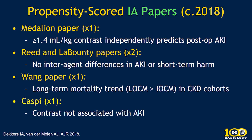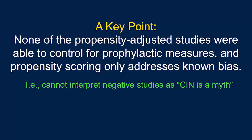Overall, putting all these together, we have some questionable signal in the CKD stage four and five range, but the vast majority of patients exposed to contrast are likely at zero or very little risk. Key point: none of these propensity-adjusted studies were able to control for prophylactic measures, and propensity scoring only addresses known bias. These are not randomized trials. You cannot interpret a negative study as CIN being a myth — however, you can interpret them to indicate that the risk of CIN is historically very much overblown, and using conventional methods the risk can be significantly mitigated.